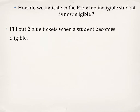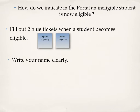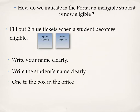Teachers, this week when a student becomes eligible, fill out two blue sports tickets. Make sure you write your name clearly on the ticket and the student's name clearly. One of the tickets will go in a box in the office, and Hope is going to restore the student's eligibility based on that ticket, and the other will go to the coach.